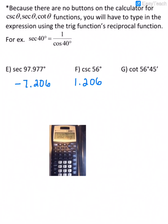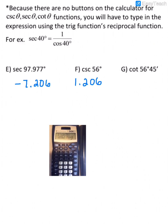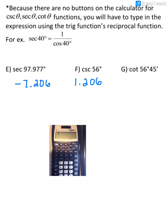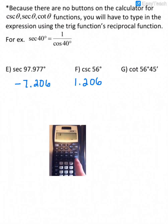Alright, and then for the cotangent of 56 degrees and 45 minutes, we know that cotangent is the reciprocal of tangent, so again we would just do 1 divided by, and it would be tangent of 56.